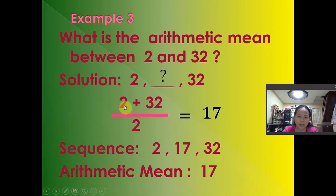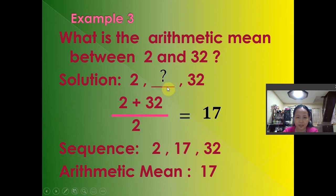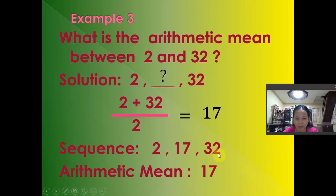Example 3: What is the arithmetic mean between 2 and 32? Here we look for only one arithmetic mean, so we have 2, a missing term, and 32. To find it, we add the first and last terms and divide by 2: (2 + 32) ÷ 2 = 34 ÷ 2 = 17. So the sequence is 2, 17, 32, and therefore the arithmetic mean between 2 and 32 is 17.